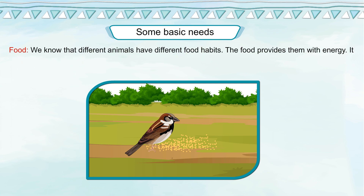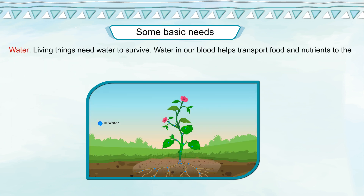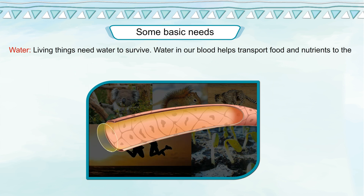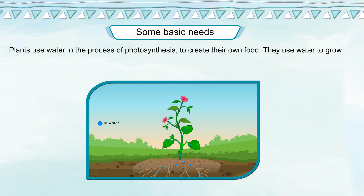Food: Different animals have different food habits. Food provides them with energy and also with the essential nutrients they need to build up their bodies, grow and repair damage. Water: Living things need water to survive. Water in our blood helps transport food and nutrients to the different body parts. It helps remove waste products from the body. Plants use water in the process of photosynthesis to create their own food.